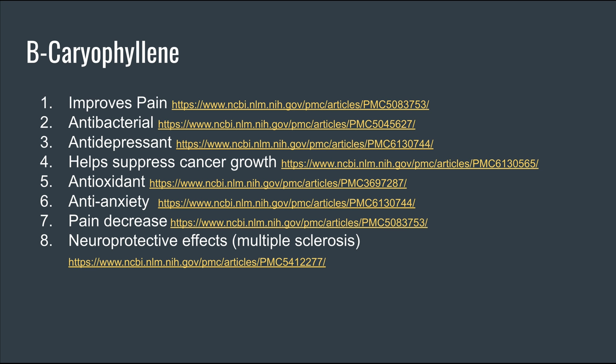Beta-caryophyllene is widely discussed and exists in many different hemp strains. It's added to many hemp oils because of its various properties: it suppresses cancer cell growth, has antidepressant, antibacterial, and anti-anxiety effects, helps with pain, and one study shows neuroprotective effects in multiple sclerosis.